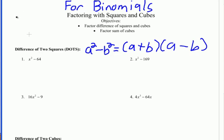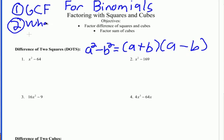Remember, every time you factor, there are really two things to consider. First, we're still going to look for a GCF first on every problem, no matter what — that's always the first method. Then we're going to look at what size it is to decide what to do next. In this whole video they're going to be binomials, so these are the methods we're going to be checking.